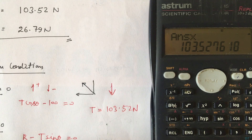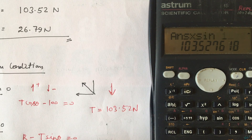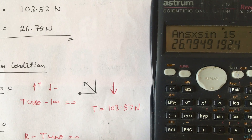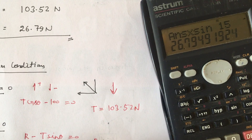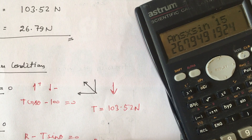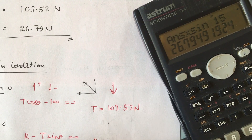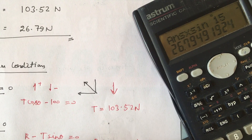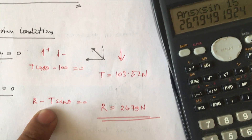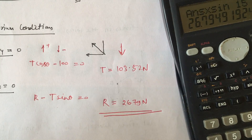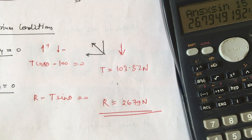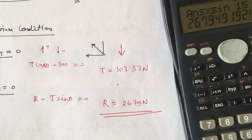From R = T sin theta, substituting the value gives R equal to 26.79 Newton — the same answer as obtained using Lamy's theorem. Thanks for watching.